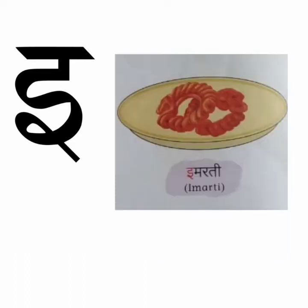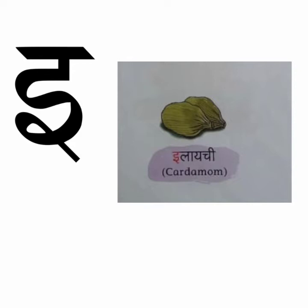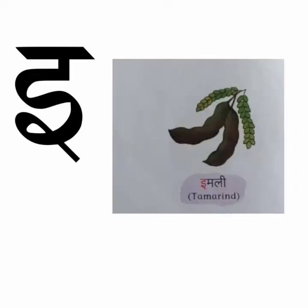E say imarti. Imarti looks like jalebi and it is sweet in taste. E say ilaichi — ilaichi means cardamom. It is used in making sweets. E say imli — imli means tamarind. It is sour in taste.